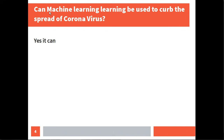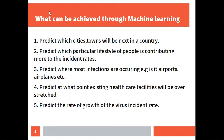Can machine learning be used to curb the spread of coronavirus? My answer is yes it can. What can be achieved through machine learning? Using ML, you can predict which cities or towns will be the next affected in a country with regards to the pandemic.